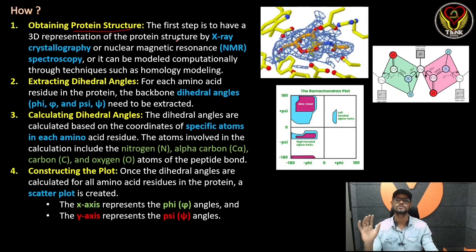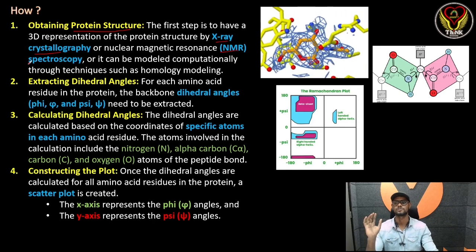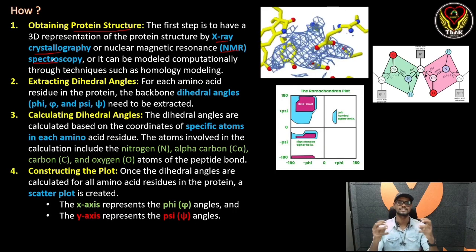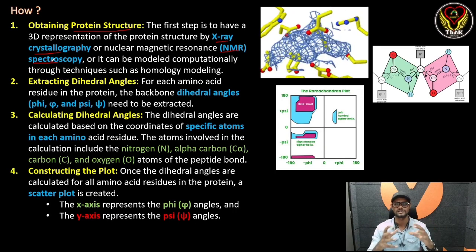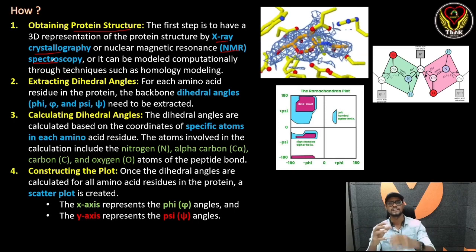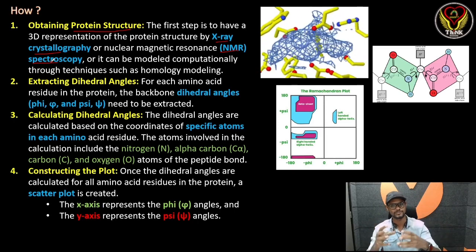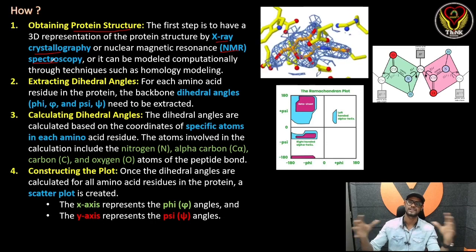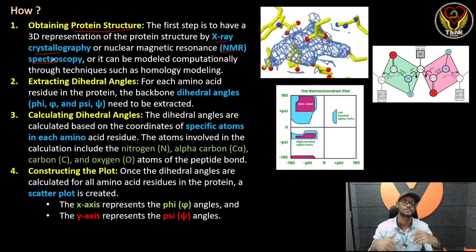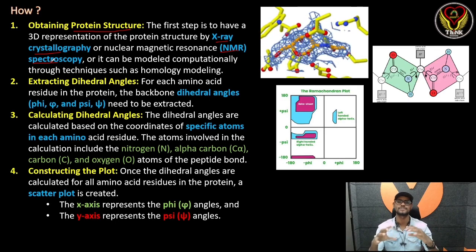First, X-ray crystallography or NMR spectroscopy — we have to study these two techniques. If you look at alanine, that is a structure determined by X-ray crystallography or NMR spectroscopy. There is a video in detail about NMR spectroscopy. If you look at the description below, you can see it more easily.